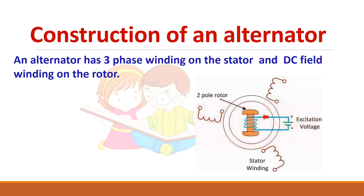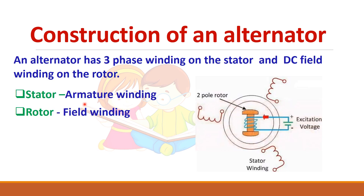Next we will see the construction of an alternator. Like any other machine, it has two major parts: the stator, which is the stationary part, and the rotor, the rotating part. The stator has three windings, and the rotor has a field winding which should be given a DC voltage. So the stator has the armature winding and the rotor has the field winding.